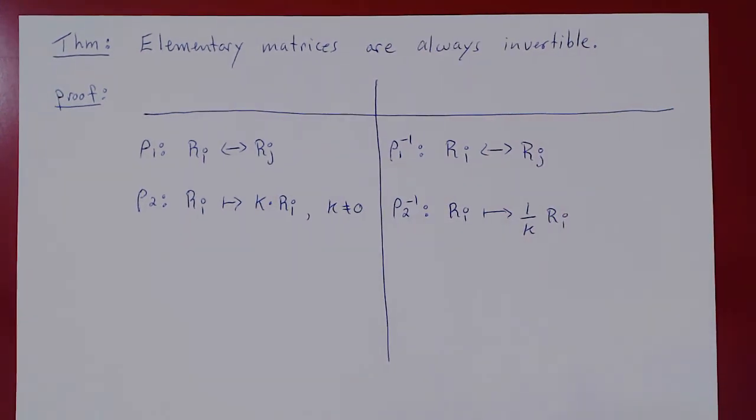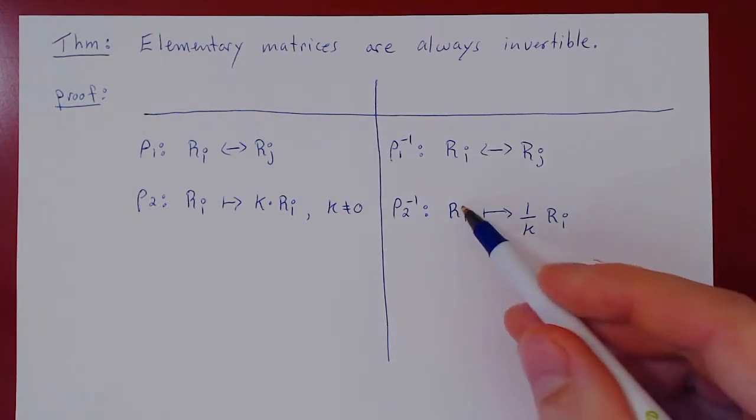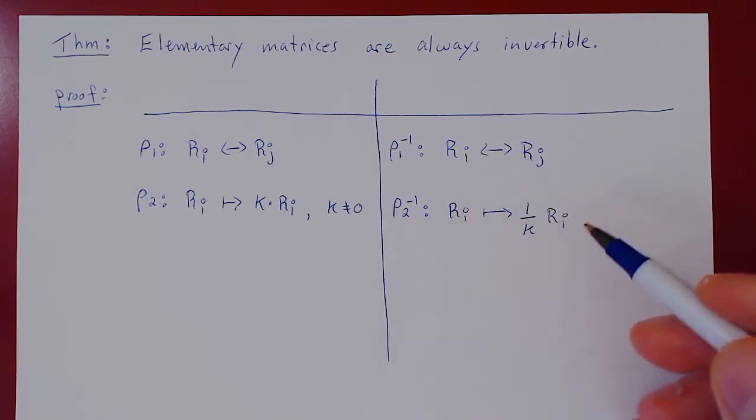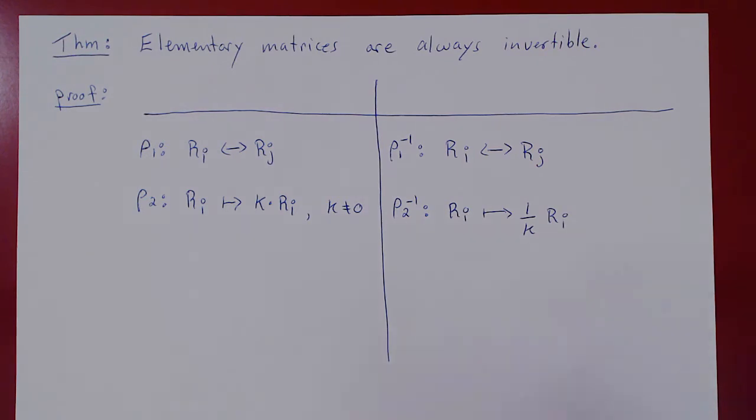If k was 2, then you multiply the row by 2, multiply the row again by 1/2, and you're back to the original row. So we can again invert.